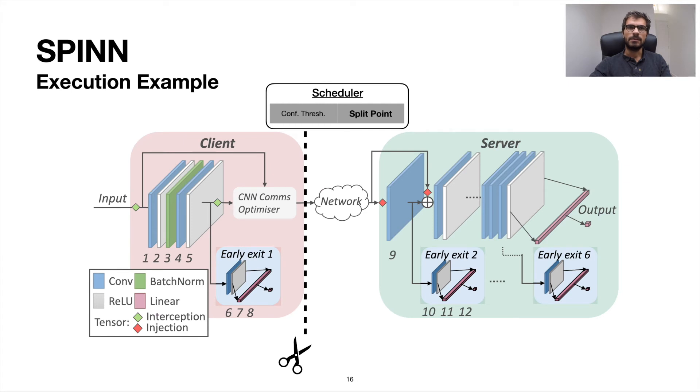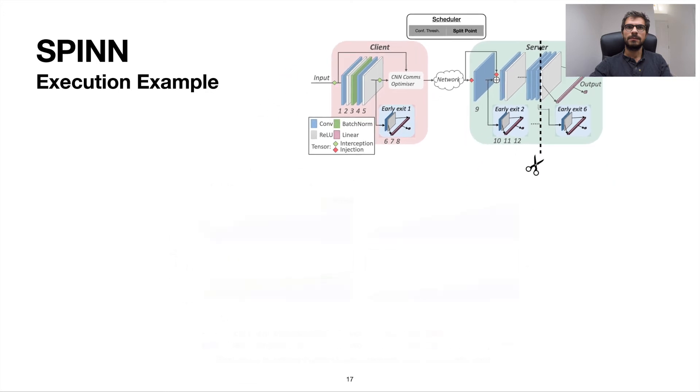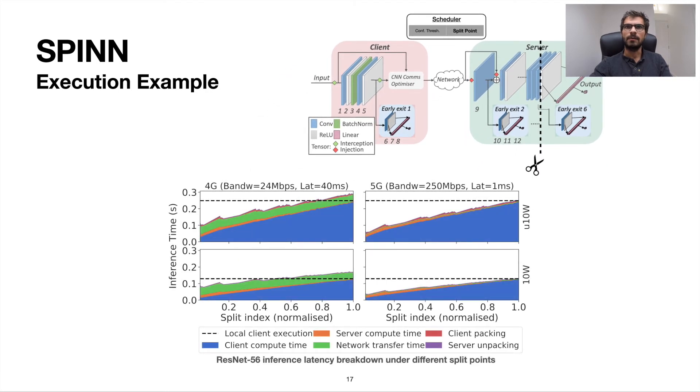The second policy that the scheduler decides on is picking the partition point of the DNN, which divides the computation between device and cloud. This graph depicts the inference latency breakdown for different split points on a vanilla non-progressive ResNet model over two different networks, namely 4G and 5G, and different energy profiles of the device. As it can be seen, dynamic conditions such as the connectivity and the device compute capabilities, play an important role in shaping the split point latency dynamics, and highlights the need for a policy that adapts to the dynamic execution conditions.